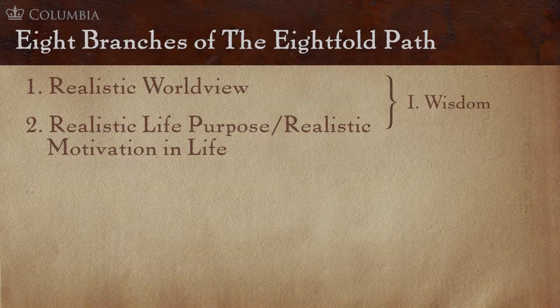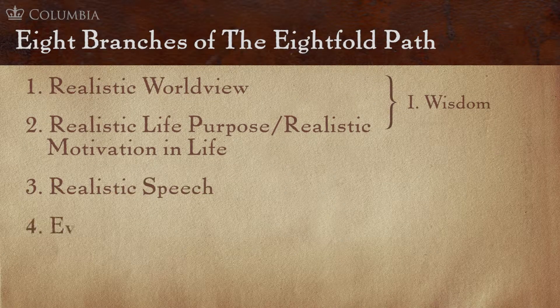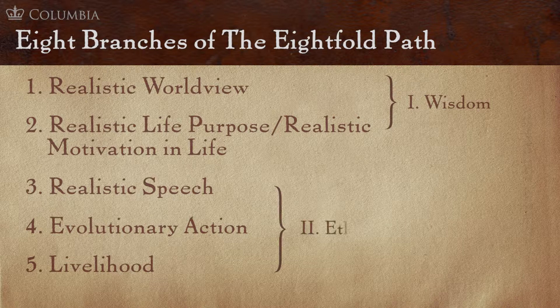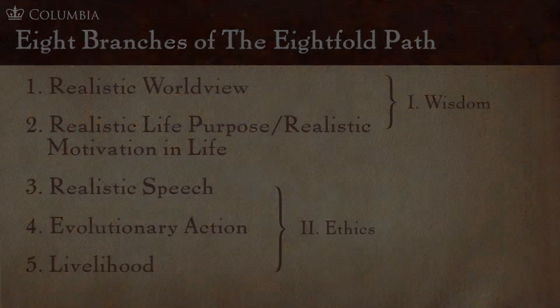Third, fourth, and fifth of the realistic eightfold path are realistic speech, evolutionary action, and livelihood. These are all the subcomponents of the higher or super education in ethics, because what we say is ethical or unethical, what we do physically is ethical or unethical, and the way we produce our livelihood is either harmful to others or not harmful to others.